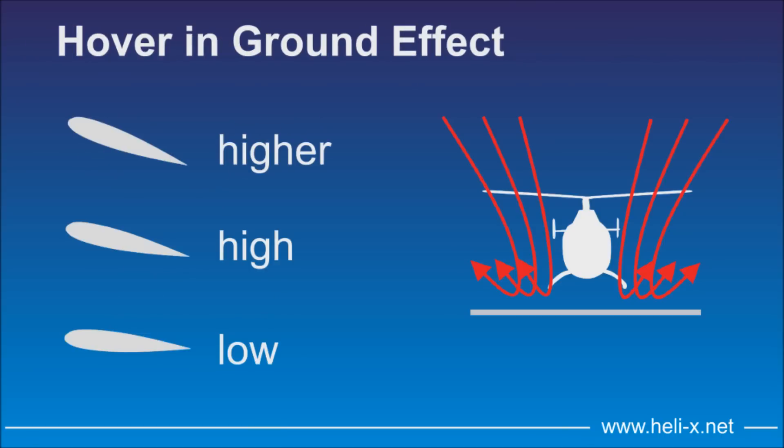When hovering in the ground effect, the angle of attack at the blades acts differently than in the free stream situation. Now, the angle does not influence the vertical speed, but the stable hover height in the ground effect. For higher hover heights, a greater angle is needed.